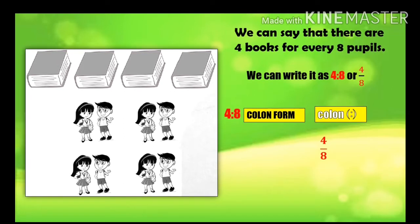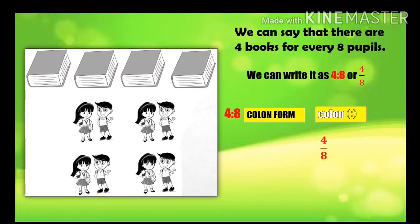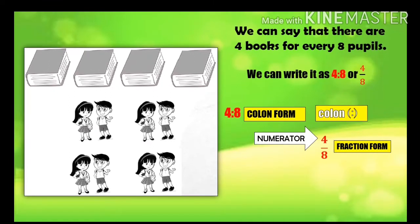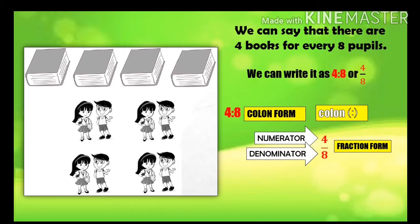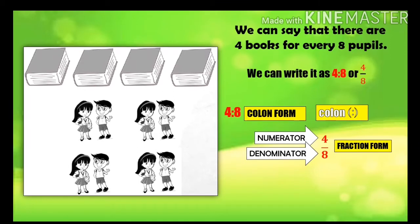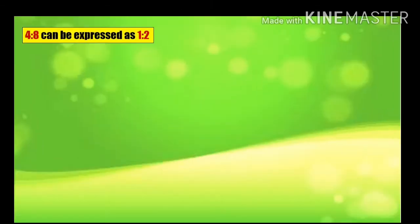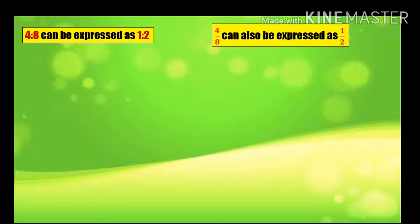On the other hand, 4 over 8 is a ratio written in fraction form because we have the numerator and the denominator. 4 is to 8 can be expressed as 1 is to 2, while 4 over 8 can also be expressed as 1 half or 1 over 2.